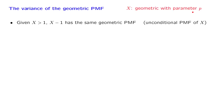Recall the memorylessness property. If x is bigger than 1, which means that the first trial was a failure — we obtained tails — then given that event, the remaining number of tosses has the same geometric PMF as if we were just starting. So it has the same geometric PMF as the unconditional PMF of x. This is the property we exploited to find the expected value of x.